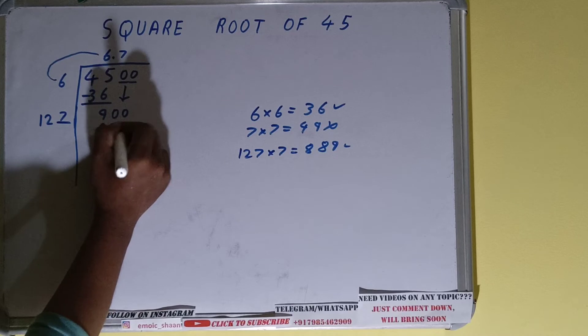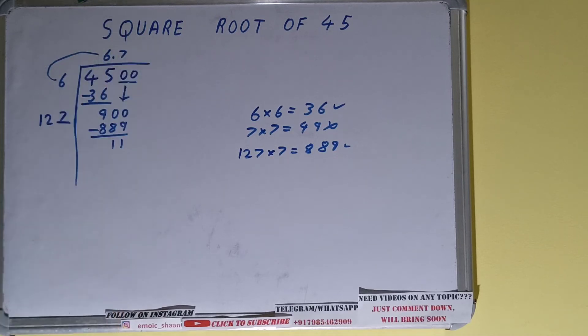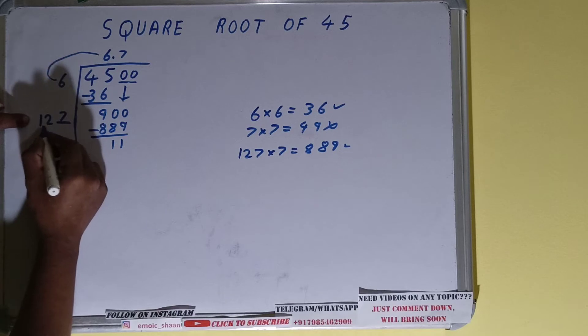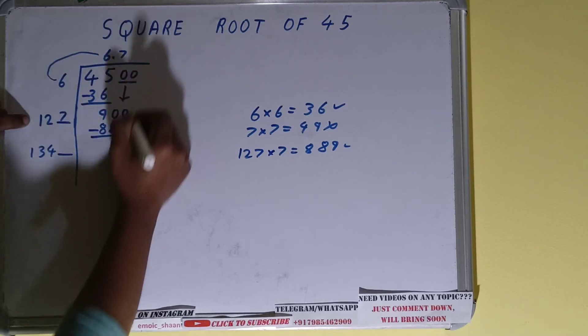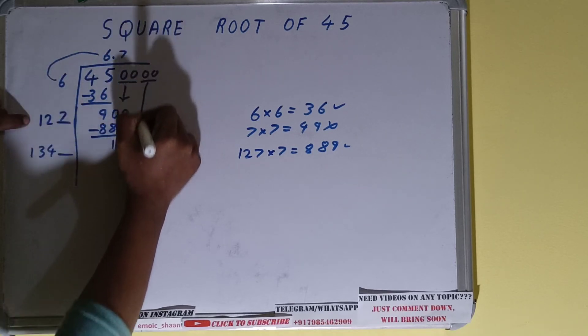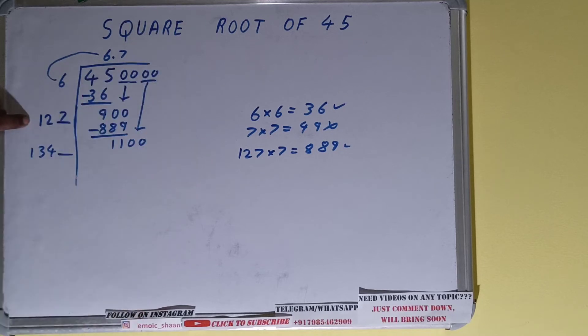889 and we'll be left with 11. All right, now again same thing with the divisor. We multiplied this 127 with 7, so add both and it will become 134 and one digit extra. And over here take one more pair of zeros, bring it down. The number will become 1100.